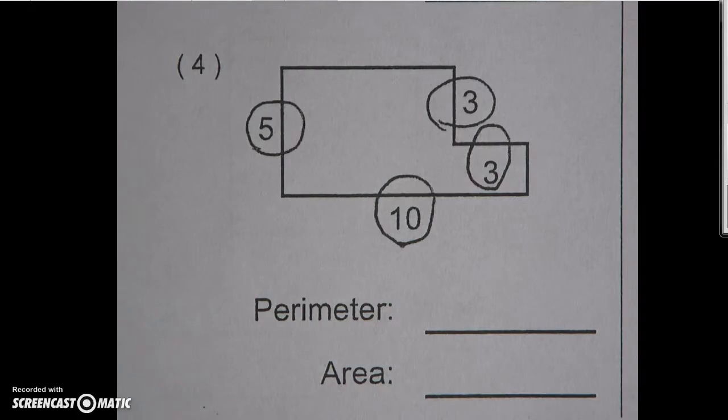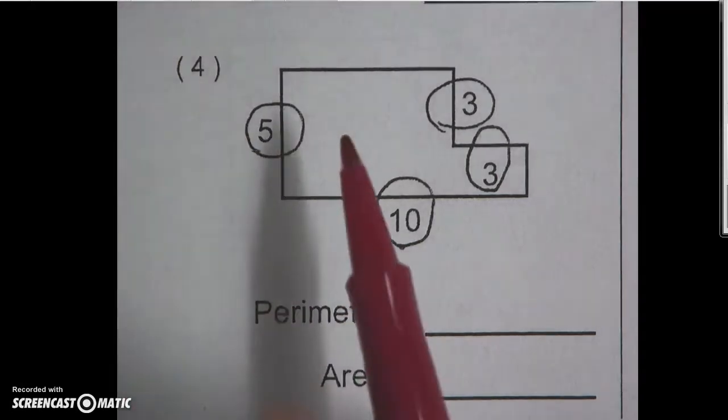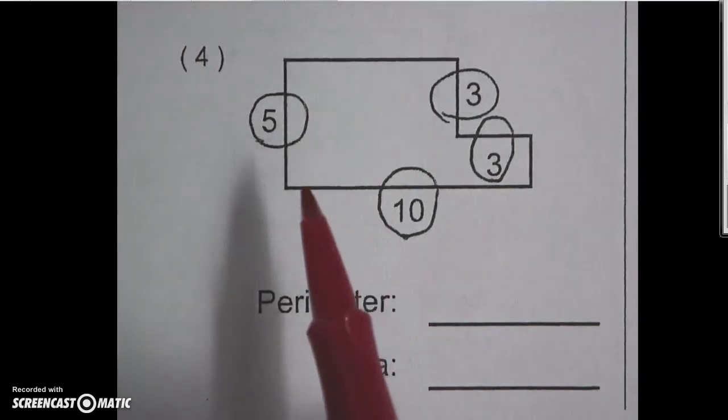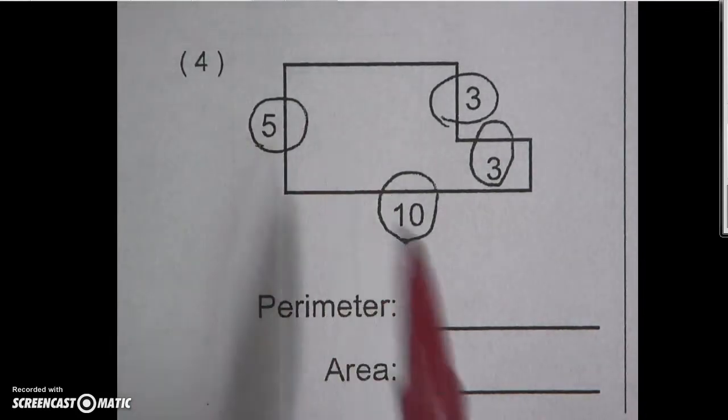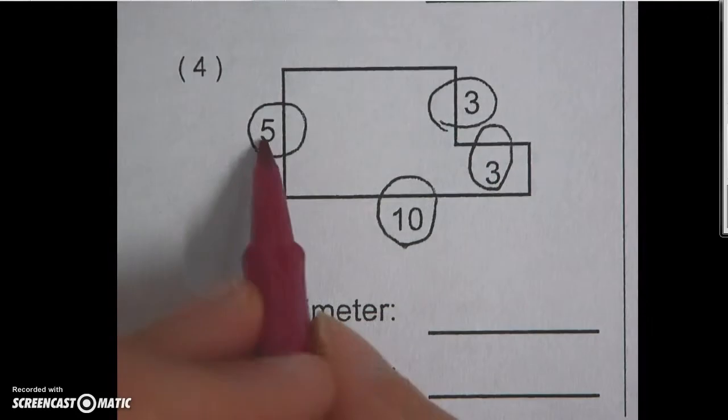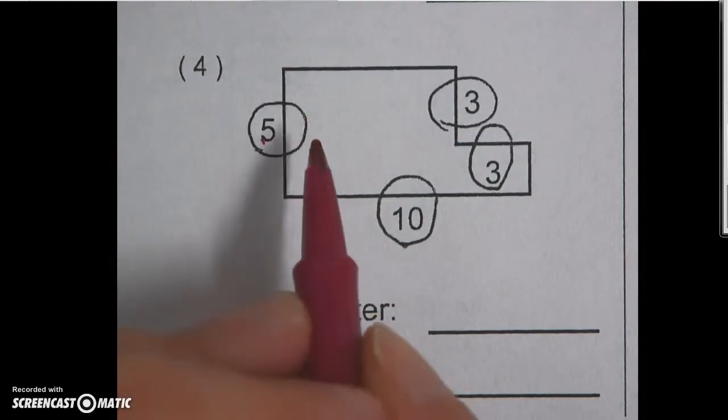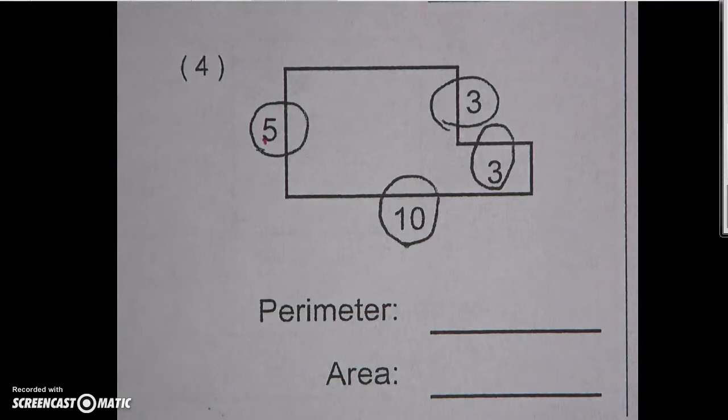I am going to show you how to find the area and perimeter of these funny looking boxes. First thing you might be wondering is why are these things circled? Well I circled them because that shows what side it goes with, otherwise there's just numbers all over the place and it gets kind of confusing.